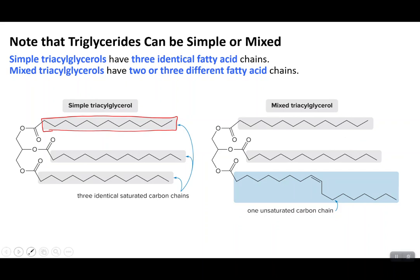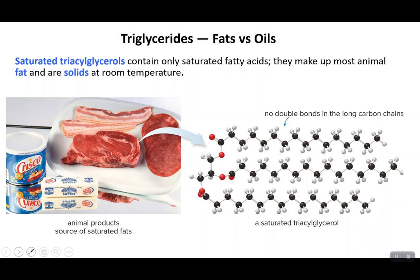Let's talk fats versus oils. When we have saturated triglycerides — meaning triglycerides composed of all saturated fatty acids with no double bonds — they make up most of animal fat and are solids at room temperature. Butter and lard, which come from animal fat, are solids at room temperature because their fatty acid chains are completely saturated. They have high melting points and, because of their structure, can stack together to form solids.